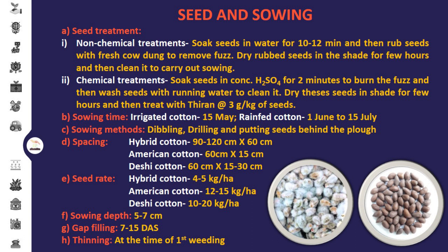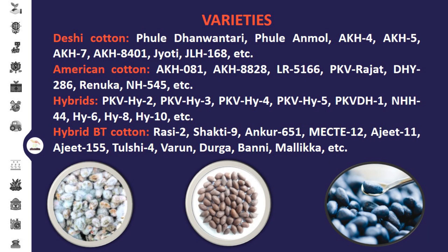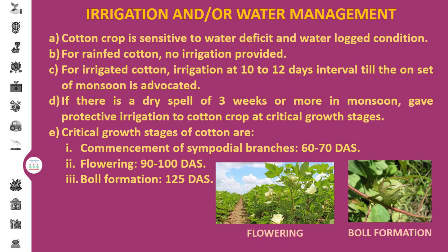The seeds are dibbled or drilled at a depth of 5 to 7 cm. Gap filling should be carried out 7 to 15 days after sowing, and thinning should be carried out at the time of first weeding.